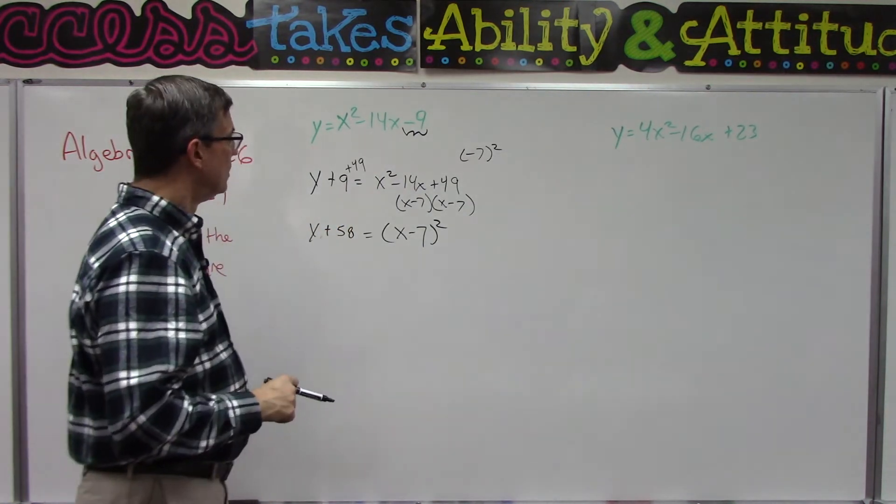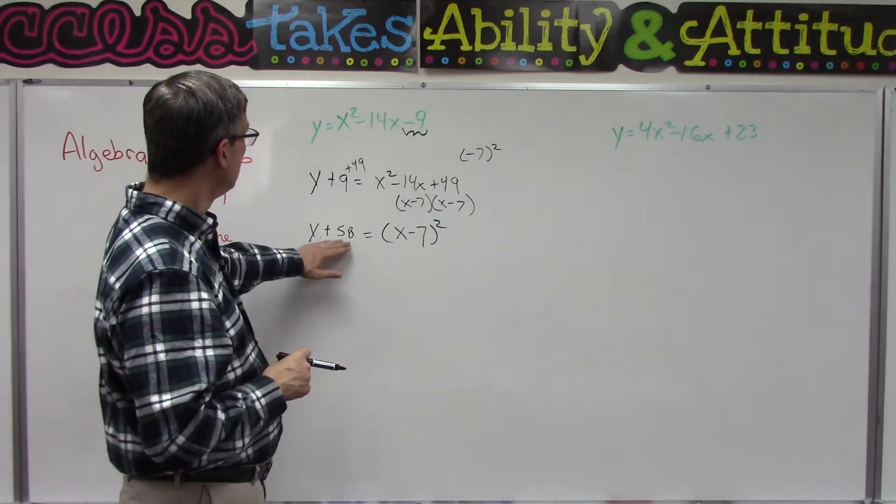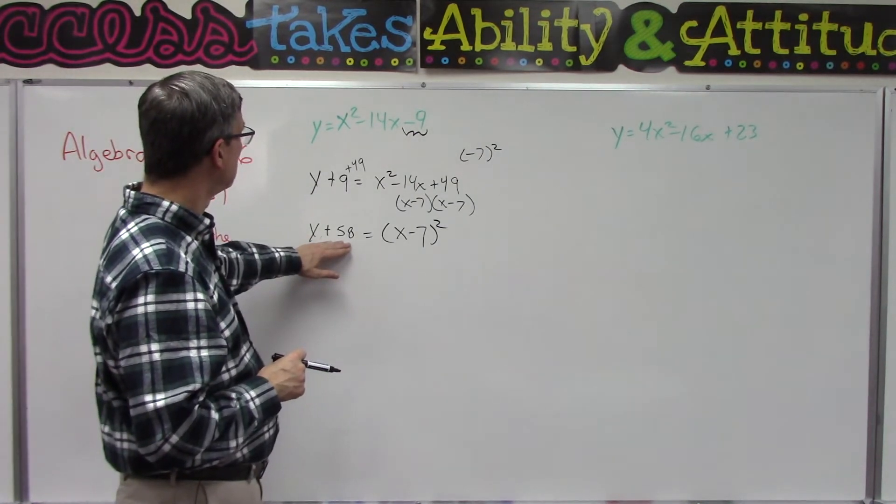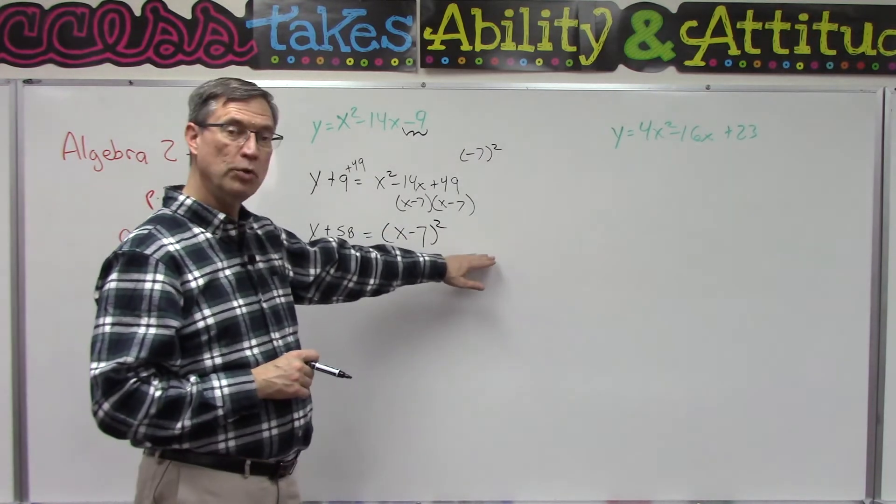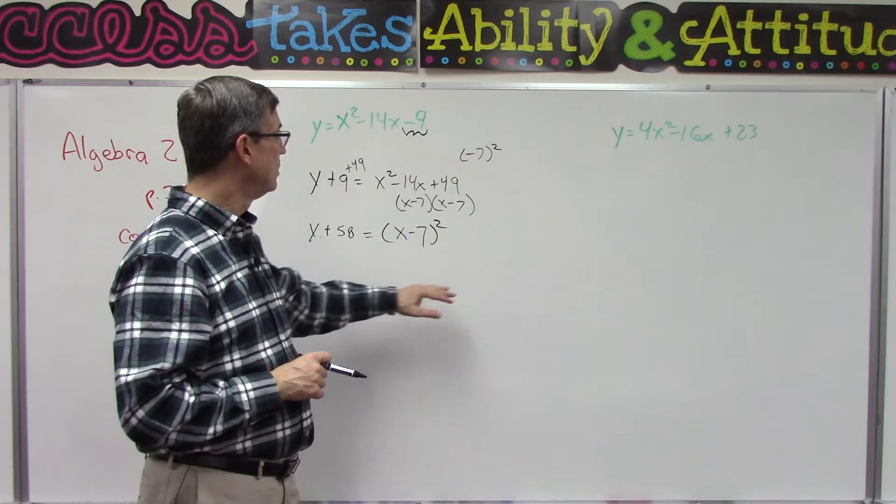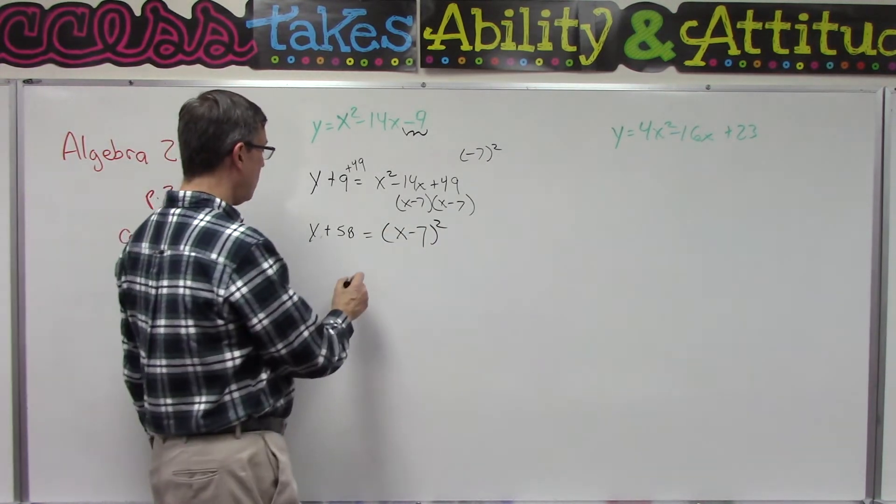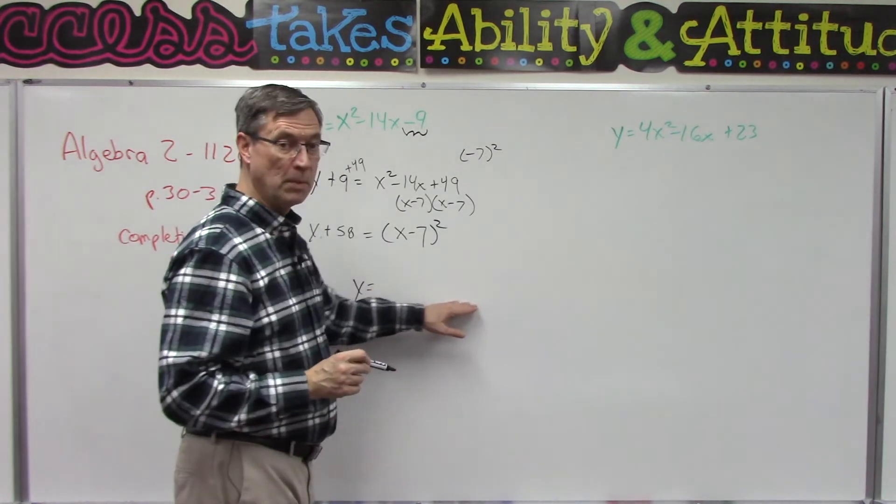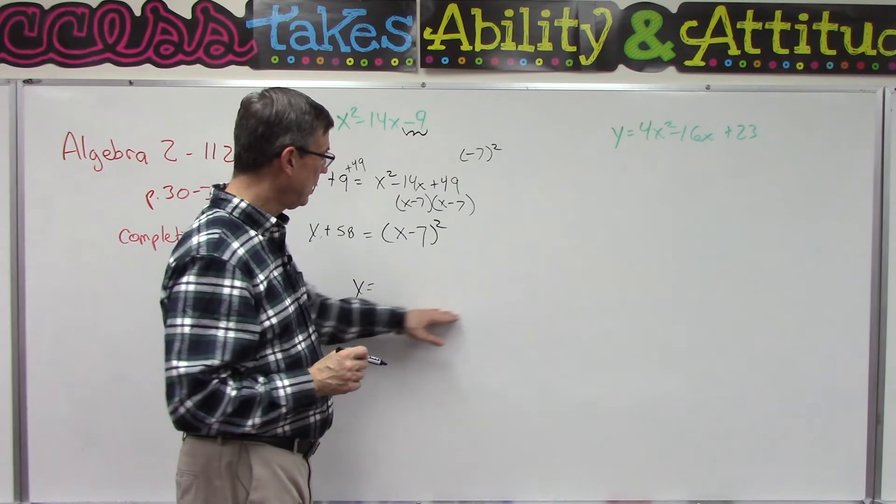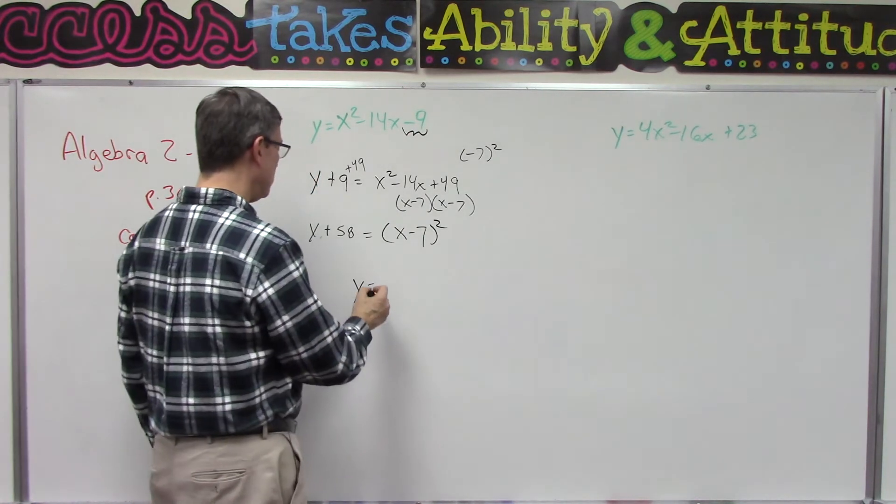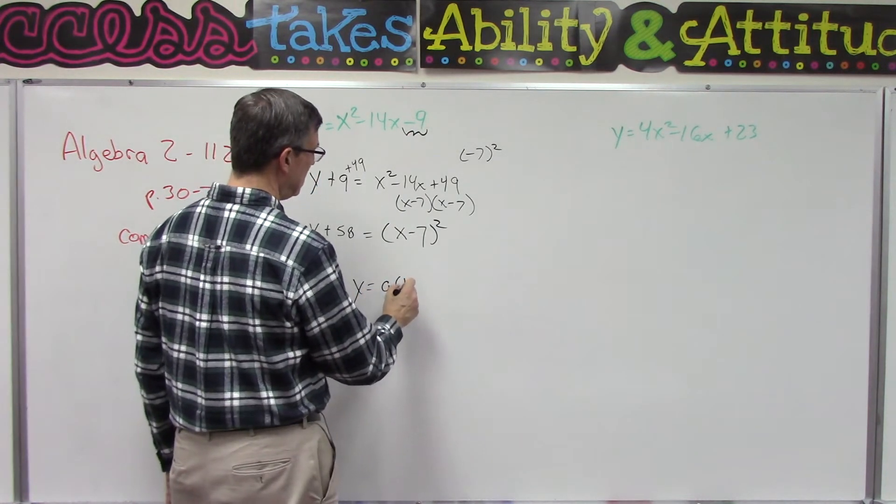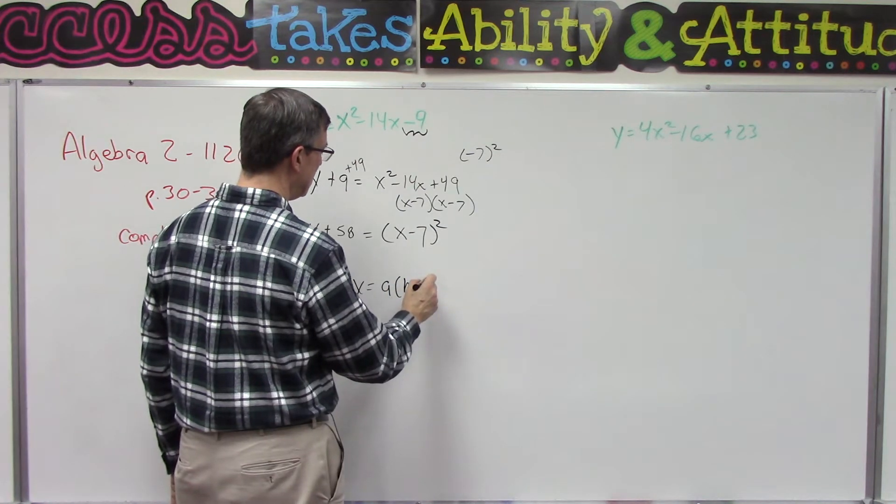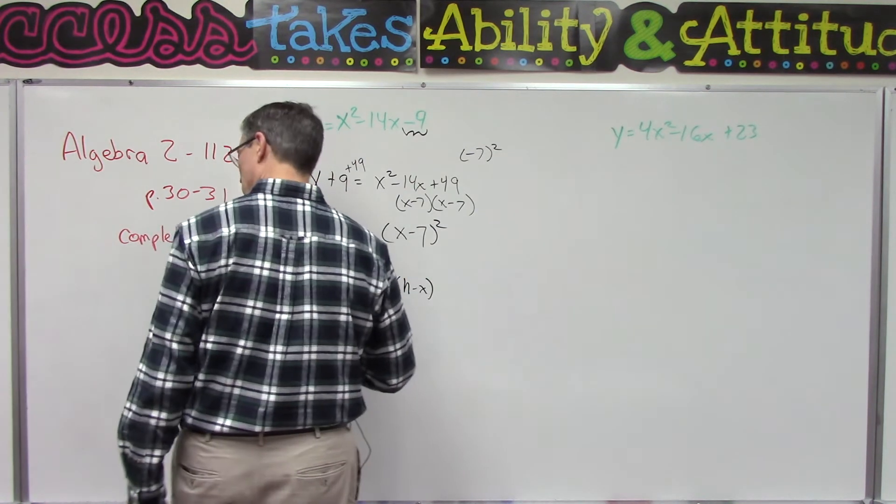Now your last step—I'm going to let you finish this—is whatever you get on this side, you have to subtract that from both sides of the equation. So then your final step is just y equals something squared plus or minus a number. And the pace calls this x minus h...